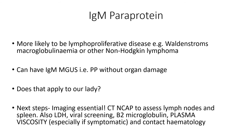So the next steps in these patients — imaging is really essential. Rather than a PET scan initially, you can do a CT neck, chest, abdomen, and pelvis to assess the lymph nodes and spleen, though many will end up with a PET scan at some point. You can also do LDH, viral screening, and beta-2 microglobulin.